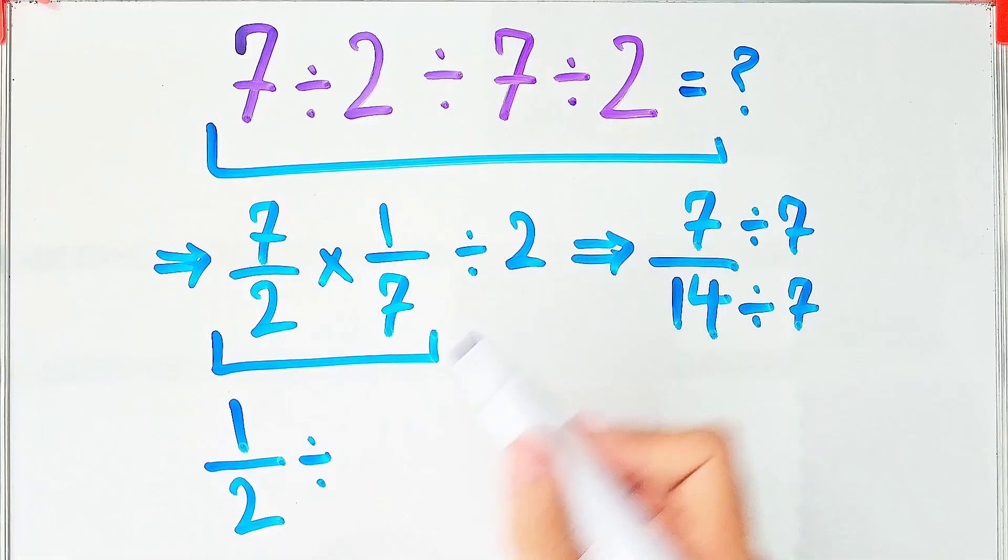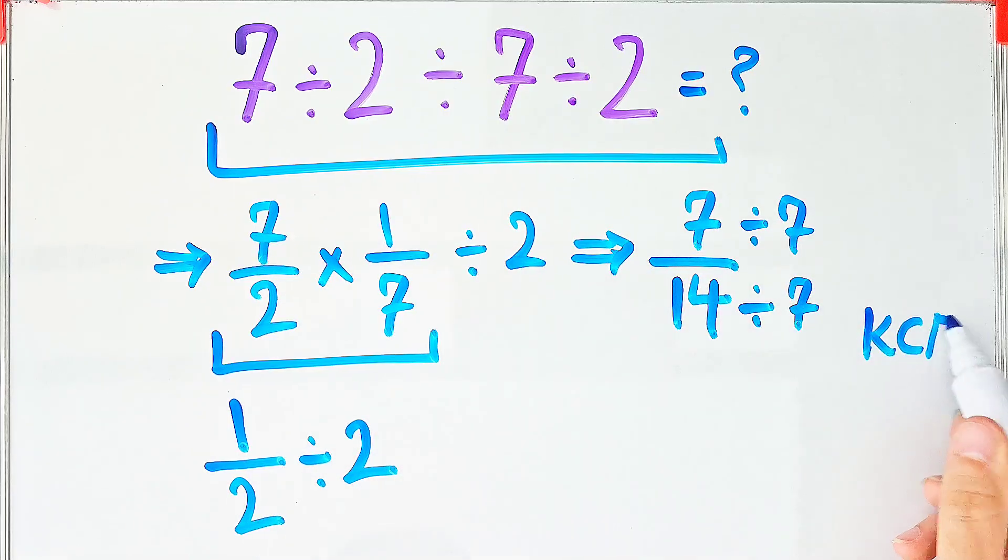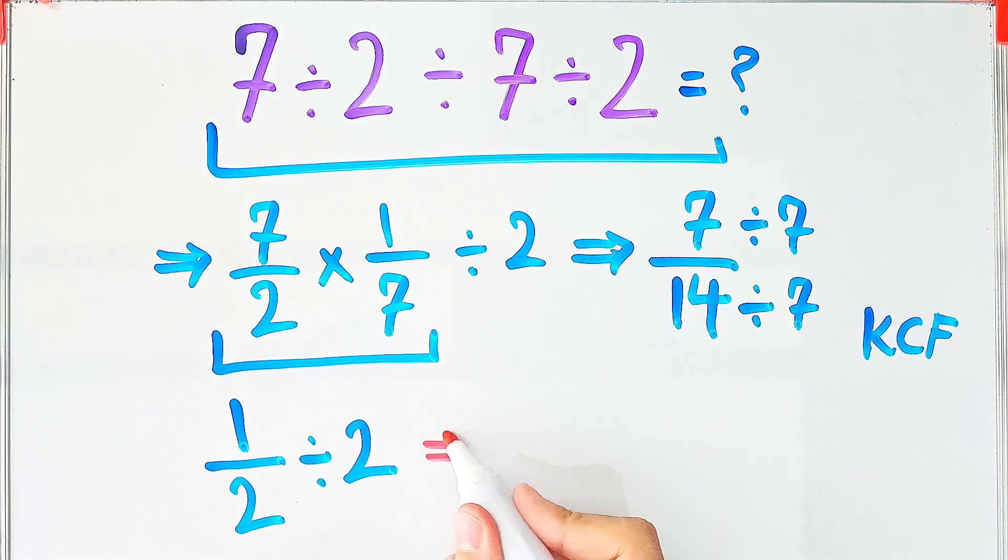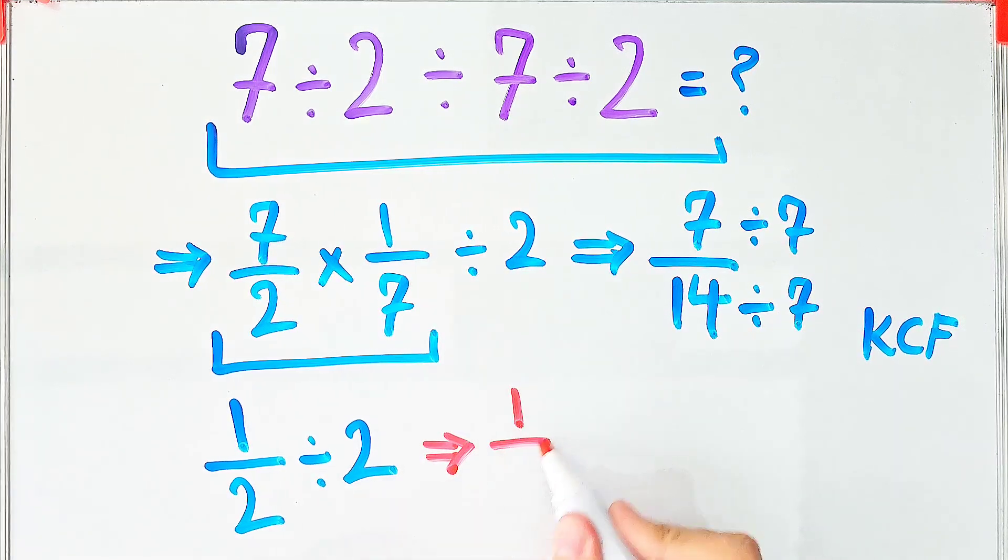Now we have 1 over 2 divided by 2. Again, we use the KCF rule. We keep the first fraction as it is. After that, we change the division sign to the multiplication sign, and after that, we flip the second number.